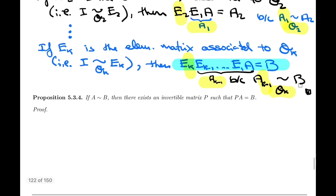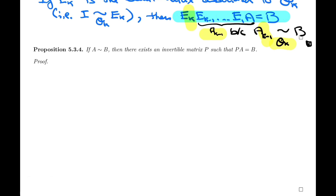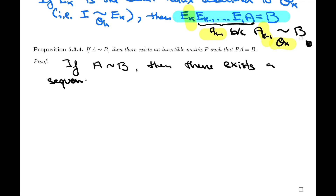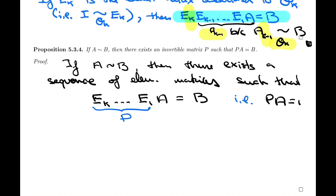That allows us to state Proposition 5.3.4, which is just an extension of this. Proposition 5.3.4 says: if A is row equivalent to B, then there exists an invertible matrix P such that P times A equals B. This is a direct consequence of what we just proved: from the previous proposition, there exists a sequence of elementary matrices such that Ek times ... times E1 times A equals B. We can just give that product a name — call it matrix P — so PA equals B.